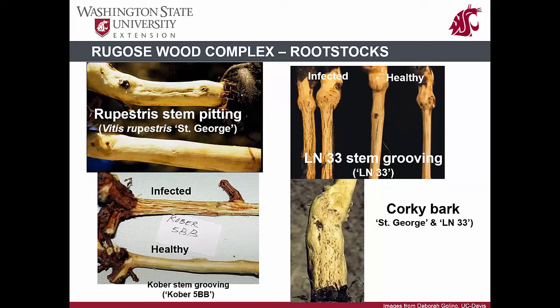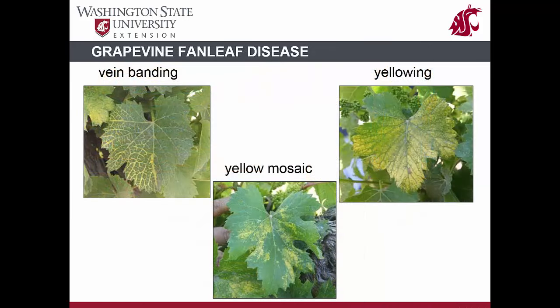Distinct symptoms on the woody trunk of grafted vines help to distinguish the four syndromes of the rugose wood complex. The rugose wood complex disorders are latent in own-rooted Vitis vinifera cultivars, but the disorder will ultimately kill the vine. Fan leaf disease is distributed worldwide and is the oldest known virus disease of Vitis vinifera — it is spread by nematodes, so the disease appears in patches in the field.